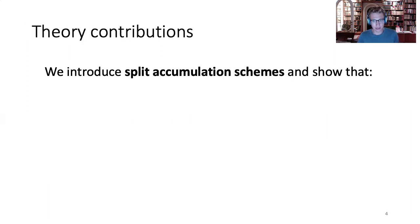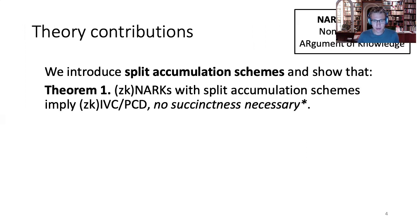In this work, we show the answer is no — we can construct IVC from something qualitatively simpler than a SNARK. We introduce something called a split accumulation scheme, and we show that given a NARC — a non-interactive argument of knowledge — with such a split accumulation scheme, we can build IVC and PCD. It's a NARC, not a SNARK, because there's no succinctness requirement on the NARC itself. There is a small asterisk: we do require that the proofs of the accumulation scheme, if it involves proofs, are succinct, but not the NARC itself.